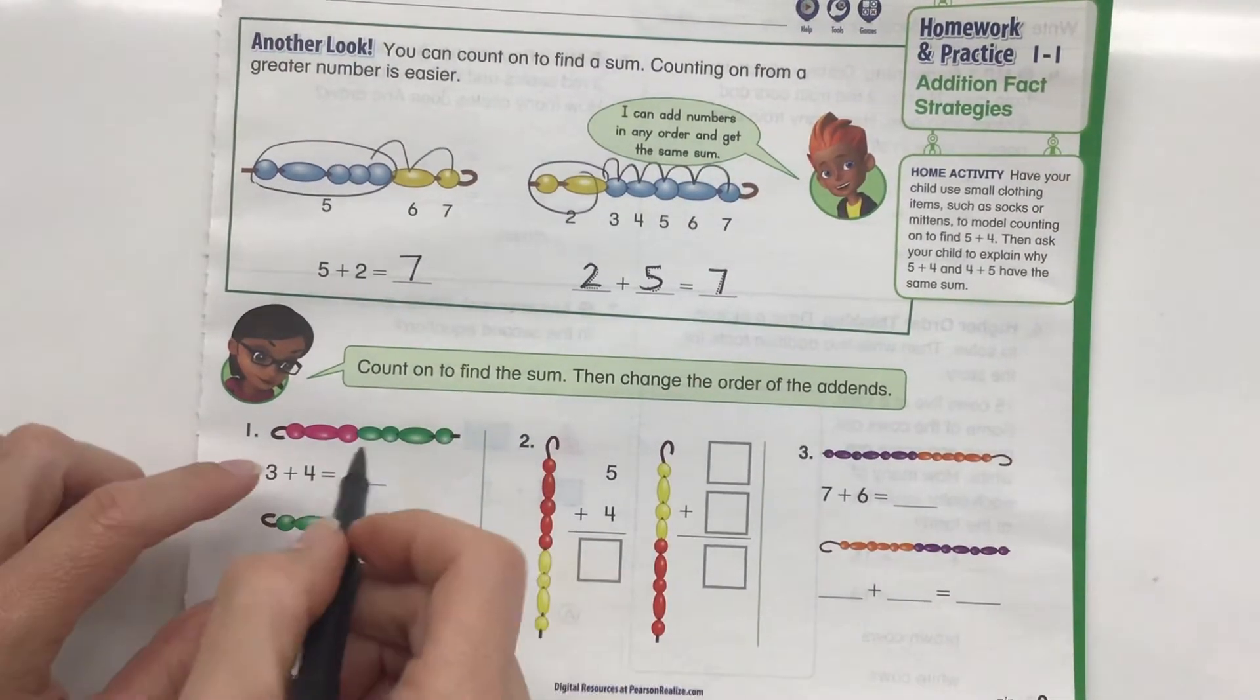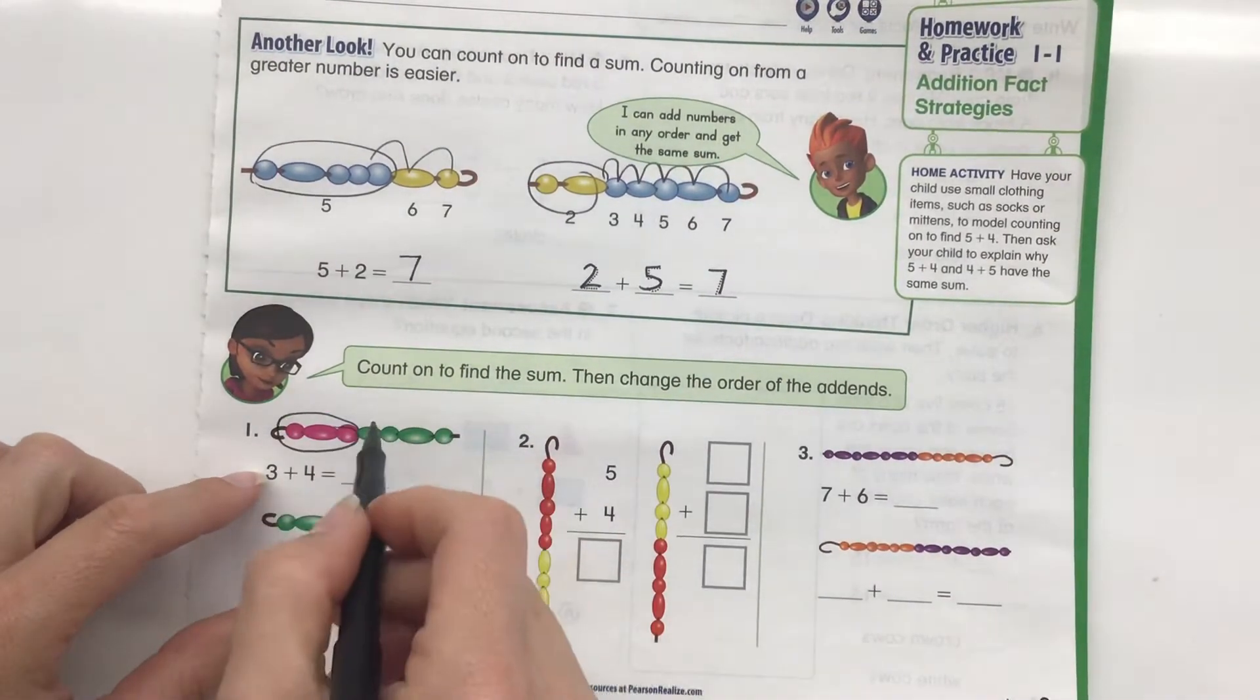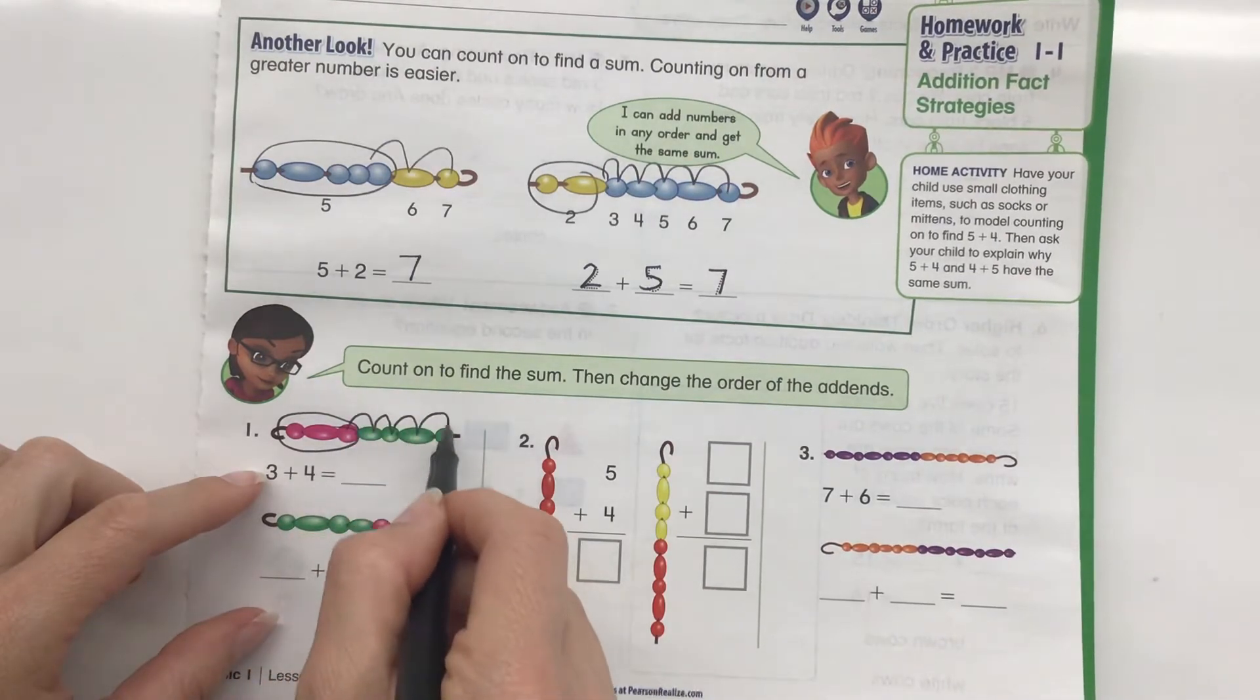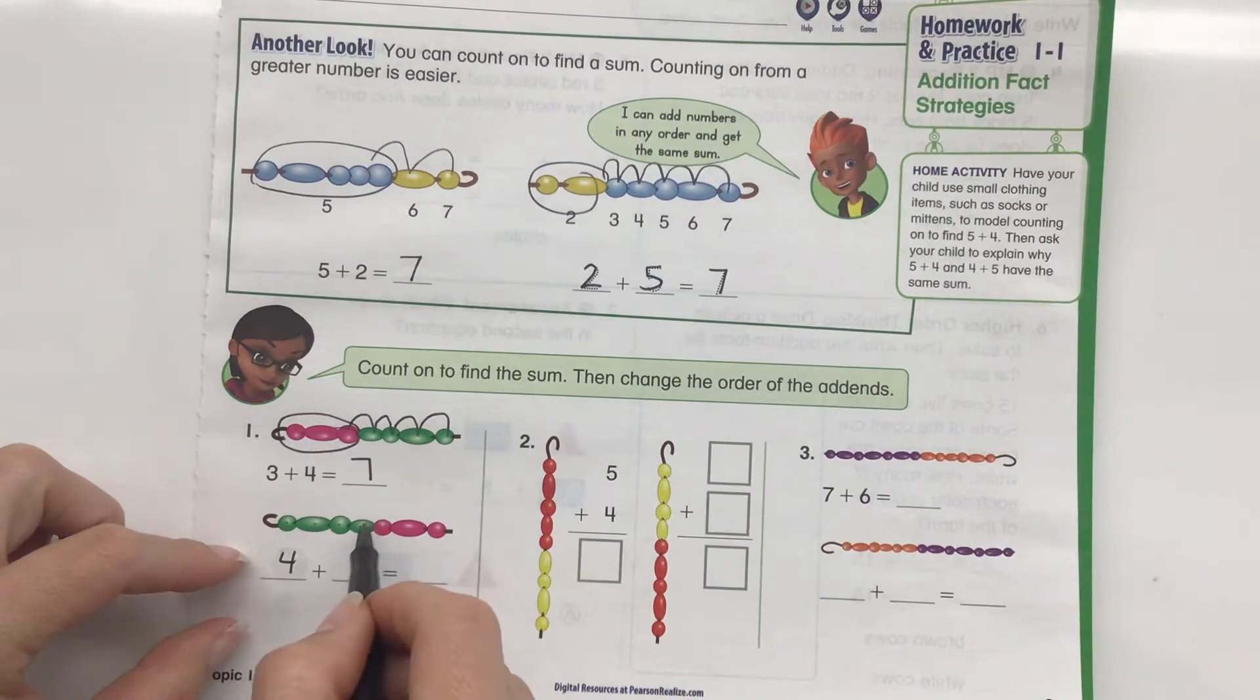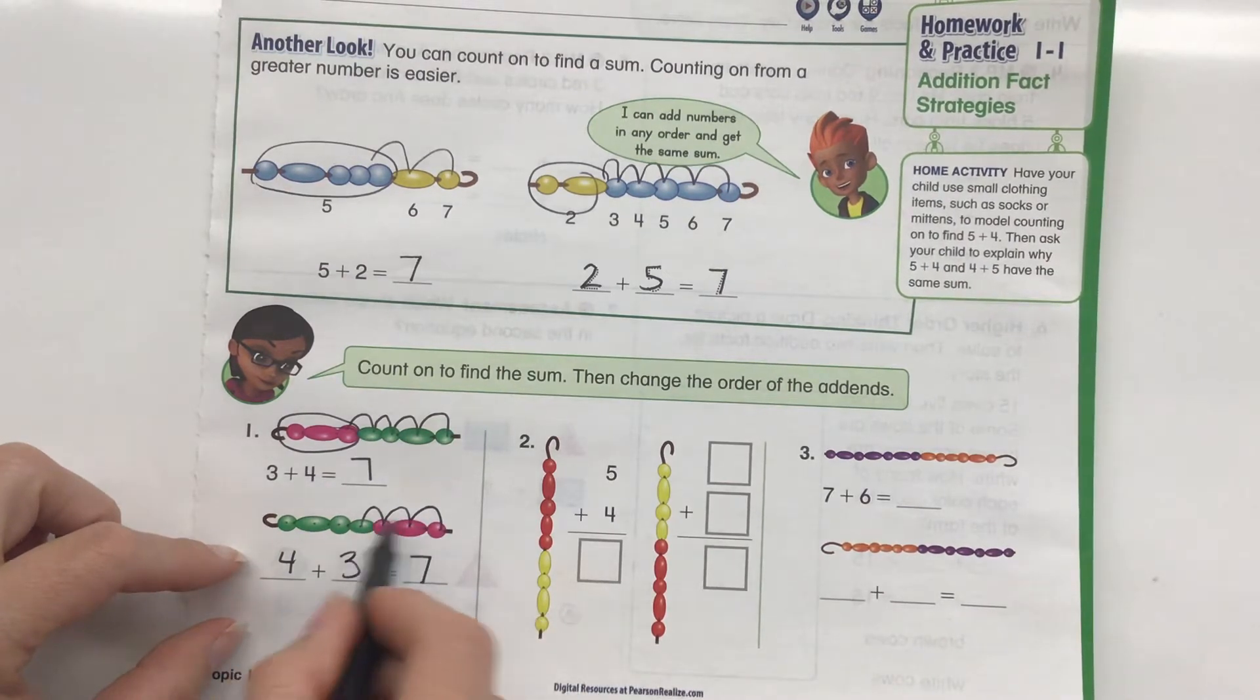Let's count on to find the sum. So we have 3 plus 4: 3, 4, 5, 6, 7. And let's start on this one: 1, 2, 3, 4. Then 4, 5, 6, 7. So you can see how that's 3 hops right there.